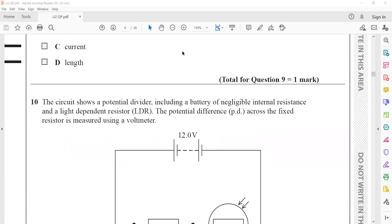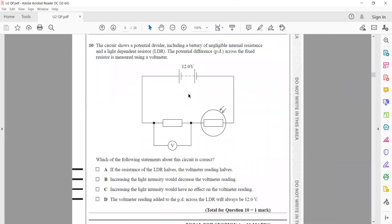The circuit shows a potential divider, meaning the circuit will divide the voltage between the components, including a battery with negligible internal resistance, a light dependent resistor, and the potential across the fixed resistor is measured using a voltmeter. Which of the following statements about the circuit is correct? If the resistance of LDR is halved, the voltmeter reading will be halved? Because the ratio of voltages is the same as the ratio of resistances. If the resistance of LDR is R by 2 and the fixed resistor is R, in terms of ratio the voltage drop would be 8 volts across the LDR and 4 volts across the fixed resistor. So it will not become half.